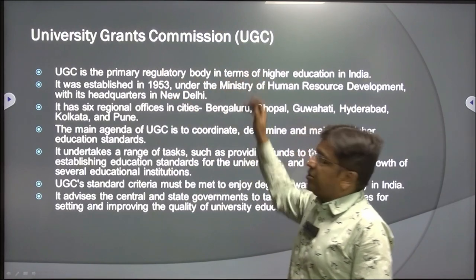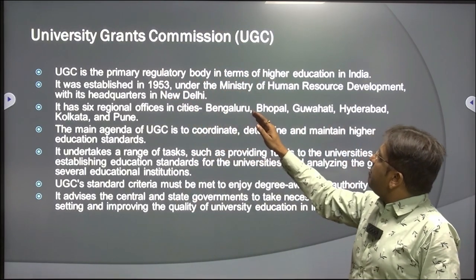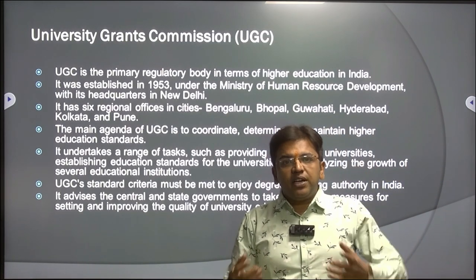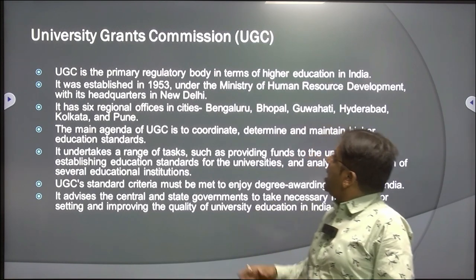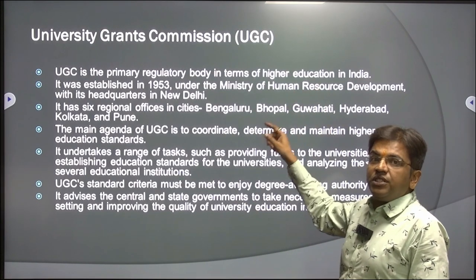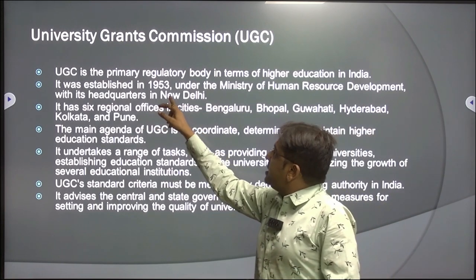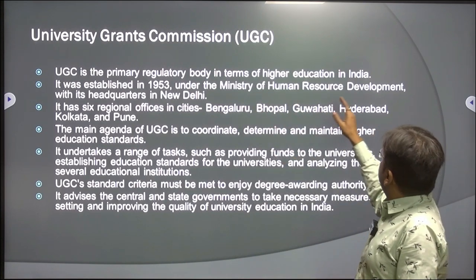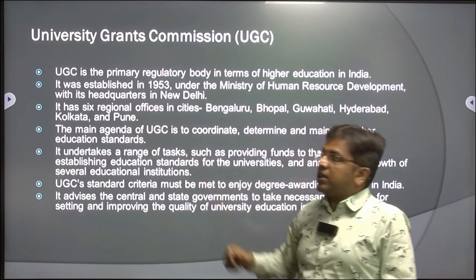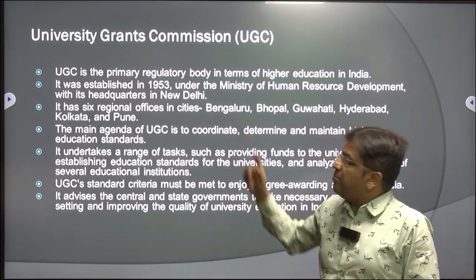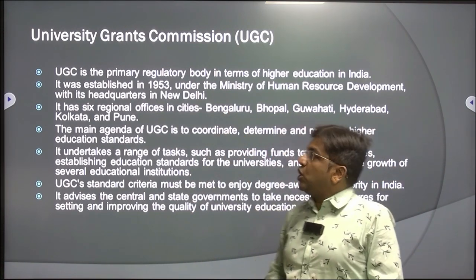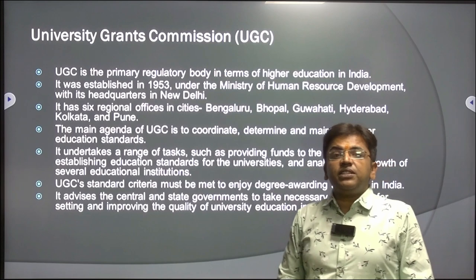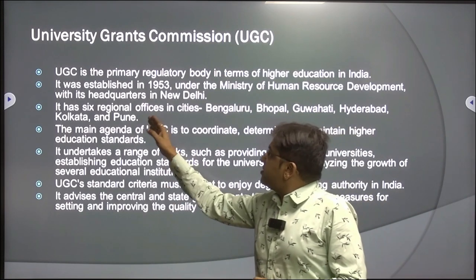The University Grants Commission (UGC) is the primary regulatory body for higher education in India. It was established in 1953 under the Ministry of Human Resource Development, with its headquarters in New Delhi. It has six regional offices in Bangalore, Bhopal, Guwahati, Hyderabad, Kolkata, and Pune.